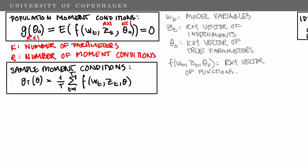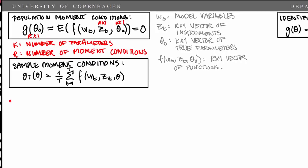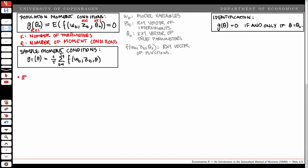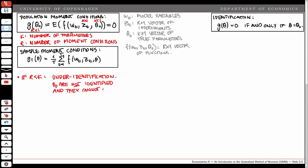Whether we can derive an estimator from the sample moment conditions depends on the numbers r and k. First, if r is less than k, we have what we call under-identification. In that case, the parameters theta zero are not identified and cannot be consistently estimated. So we try to find a set of instruments that will give us a sufficient number of moment conditions.